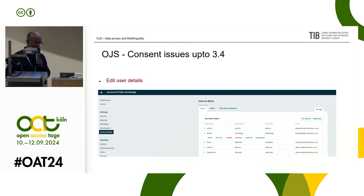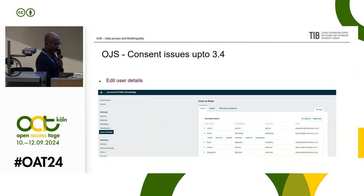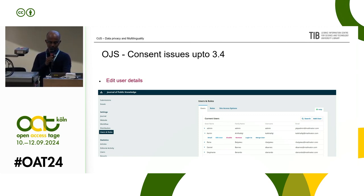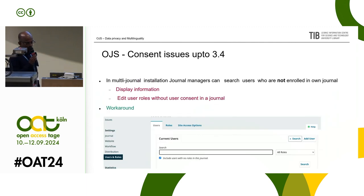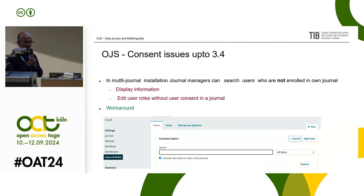Up to 3.5, the general manager can go to Users and Roles and just edit metadata and add new roles — the user may not know what has happened. This is not GDPR compatible. And the more dangerous one: you can search and select the field to include users with no roles in this journal as a journal manager. In a multi-journal installation with 2,000 users, you can just search A through Z and you will have all the users. If you are GDPR compatible, this feature has to be disabled.